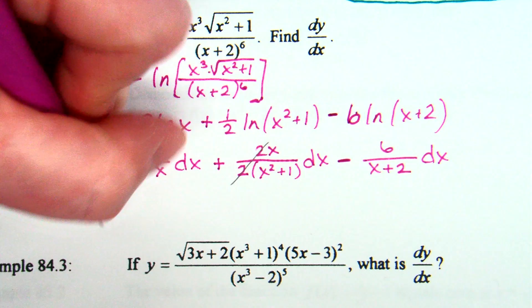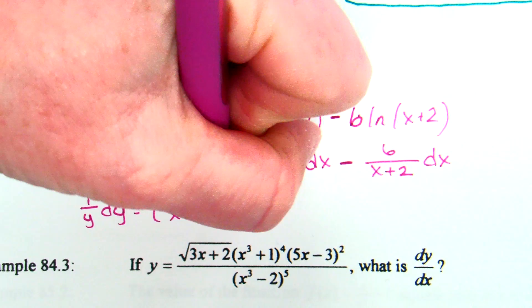One thing I'm going to go ahead and factor out the dx. So I write: still 1/y · dy on the left, and on the right: 3/x plus x/(x² + 1) minus 6/(x + 2), all in parentheses as a quantity.